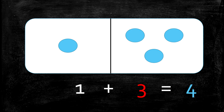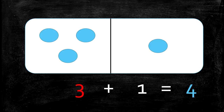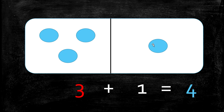And if we flip our cards, we have the matching addition fact: 3 plus 1 equals 4. So now we have 3 in this box — 1, 2, 3 — and 1 in this box, for how many altogether? 1, 2, 3, 4. Because 3 plus 1 equals 4.